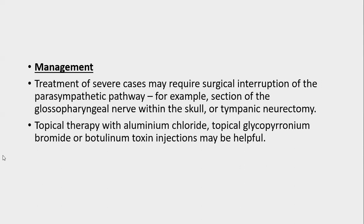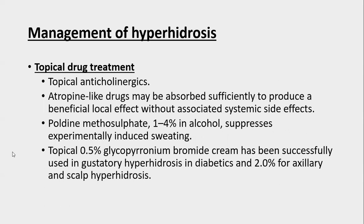Management of gustatory hyperhidrosis: severe cases require surgical interruption of the parasympathetic pathway, such as sections of the glossopharyngeal nerve within the skull or tympanic neurectomy. Topical therapies with aluminium chloride, topical glycopyrronium bromide, or botulinum toxin may also be helpful. Several topical anticholinergic drugs are used — atropine-like drugs may be absorbed sufficiently to produce a beneficial local effect without systemic effects. Poldine metosulfate 1-4% in alcohol suppresses experimentally induced sweating. Topical 0.5% glycopyrronium bromide cream is successfully used in gustatory hyperhidrosis in diabetics, and 2.2% cream is used for axillary and scalp hyperhidrosis.